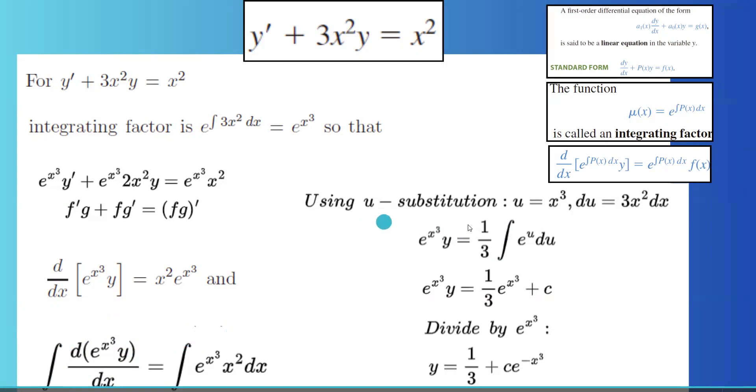We're going to use u substitution here. u is x cubed, du is 3x squared dx. So your left hand side equals to one third integral e to the u du.